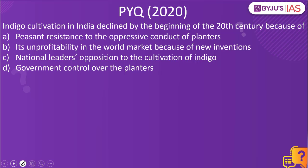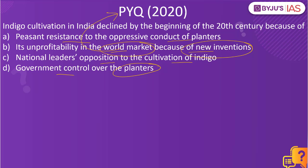Now let's look into the next practice question. Indigo cultivation in India declined by the beginning of the 20th century because of: peasant resistance to the oppressive conduct of the planters; its unprofitability in the world market because of new inventions; national leaders' opposition to the cultivation of indigo; or government control over the planters. The answer to this is its unprofitability in the world market because of new inventions. This has been asked as a previous year question from the year 2020.